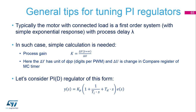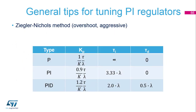FS is set in the motor control workbench and is typically 2 kHz. We will assume that the motor with the load works as a first-order system with a simple exponential response. Using the previously measured values, we can calculate the process gain as delta speed divided by delta torque. The values have units of digits per PWM and the change in the compare register of the motor control timer. We can then consider the PI regulator of the depicted form and calculate the Kp, tau_i, and tau_d parameters accordingly.